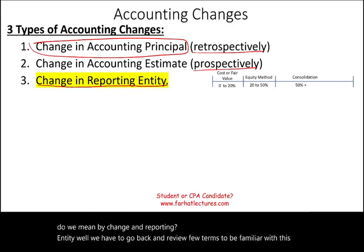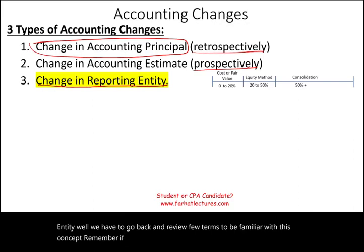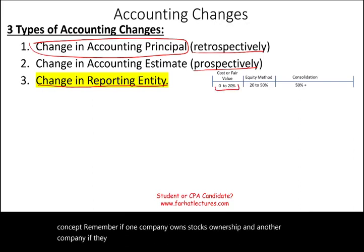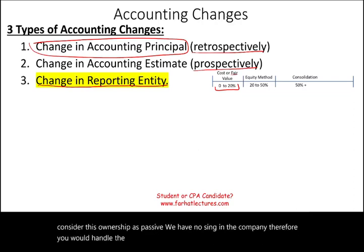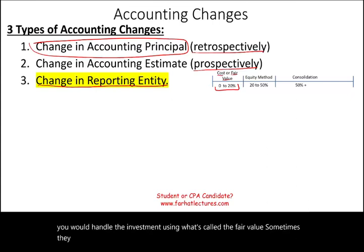Remember, if one company owns stock ownership in another company — if they own between 0 and 20 percent of the stock of the other company — we consider this ownership as passive. You have no say in the company. Therefore, you would handle the investment using what's called the fair value method, sometimes called cost. Cost or fair value means the same thing.